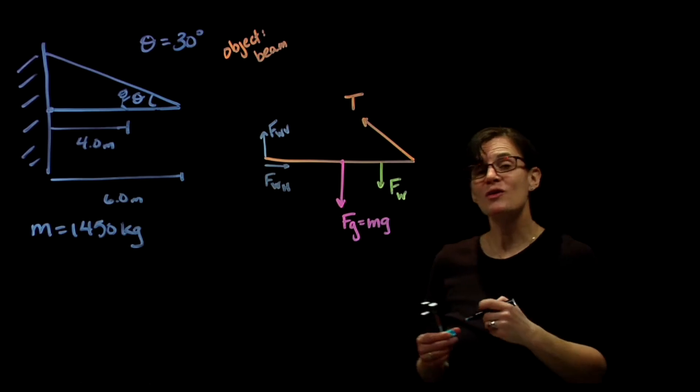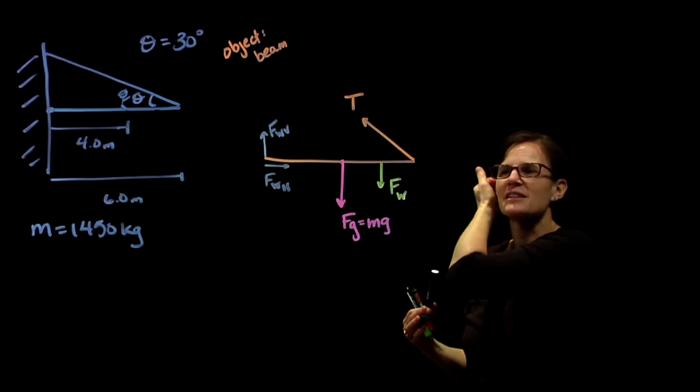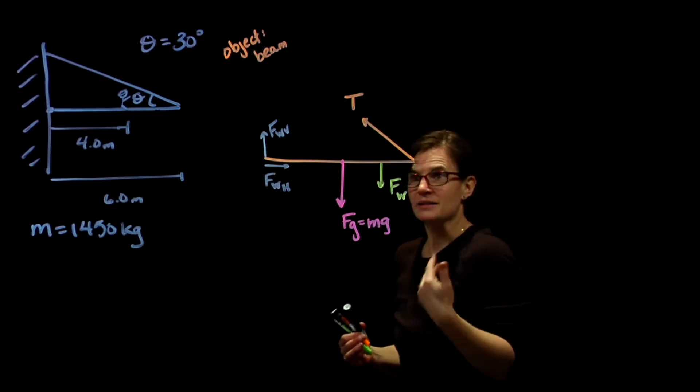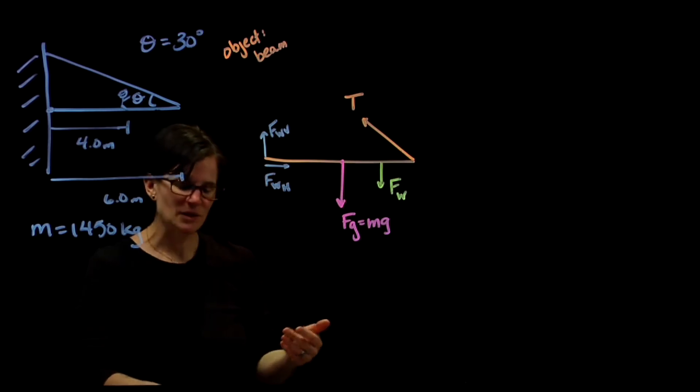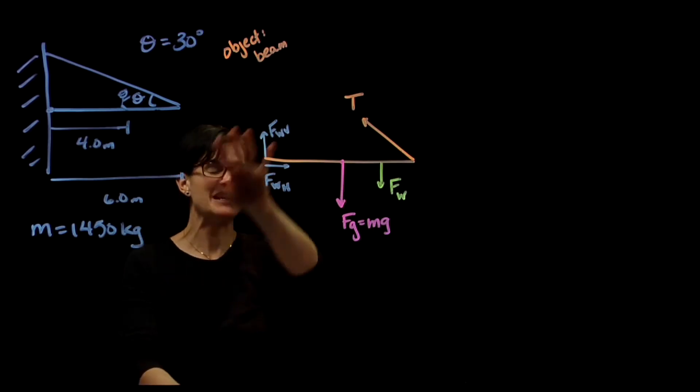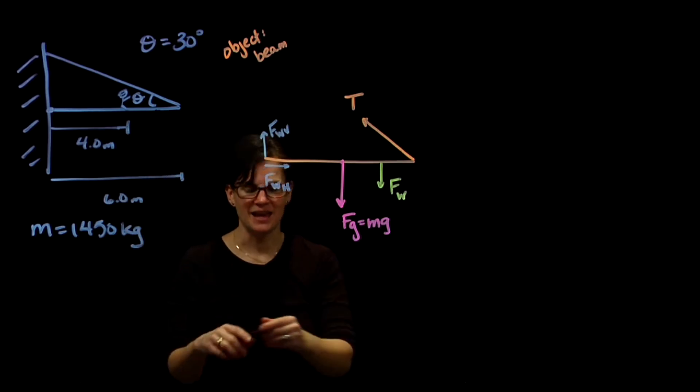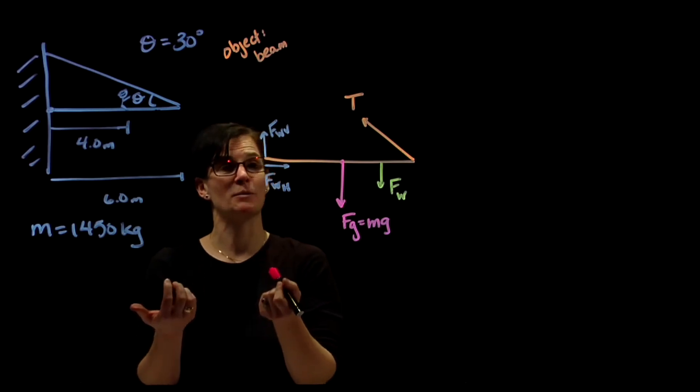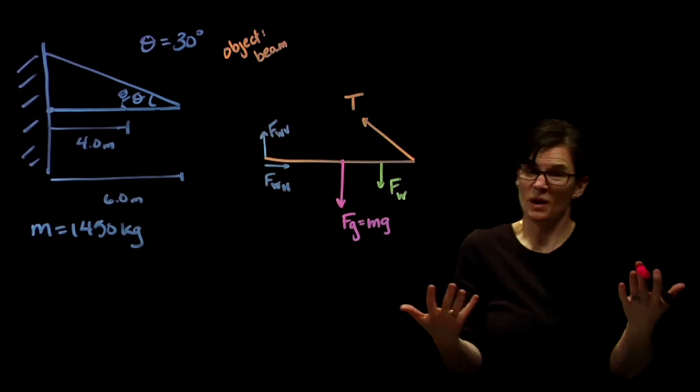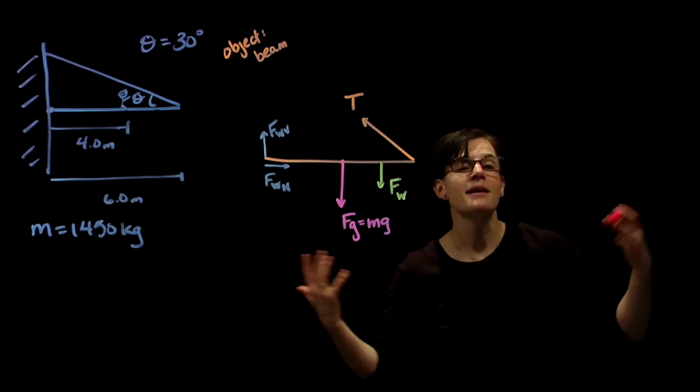Those are all the forces, all the interactions. I don't have any other objects interacting with that beam. That's my object of interest, those are my forces. So we said we were going to do a torque analysis first. We'll look at all of the torques acting on the beam. Let's look at both the radii and the angles. That requires us to pick a pivot point.